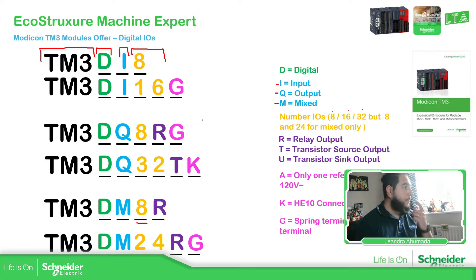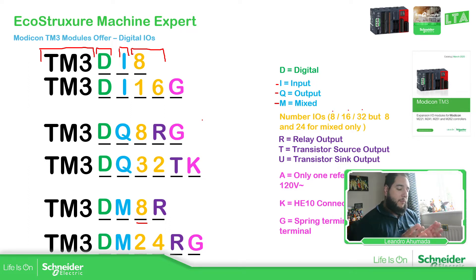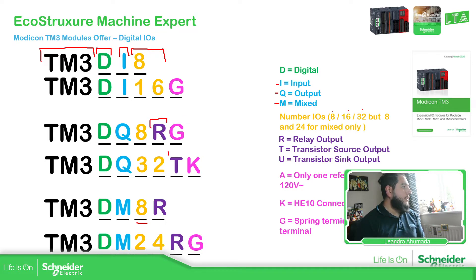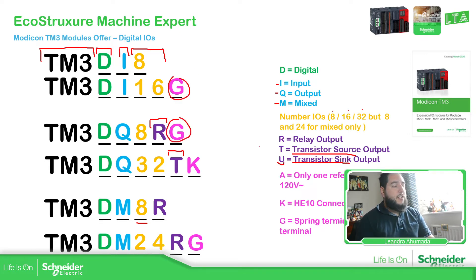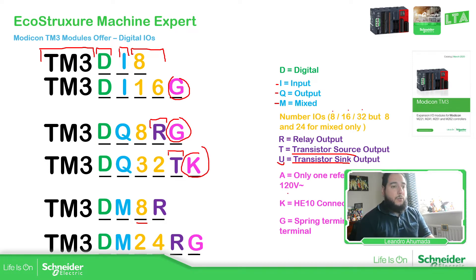There is something important to know. For digital output modules, we have the possibility to define if it uses transistor or relay outputs. To figure out which one it is: R for relay, T for transistor source output, and U for transistor sink output. The letter G is for the spring terminal — if it doesn't have that, it will use screw terminals. And then K is for the HE10 connector.